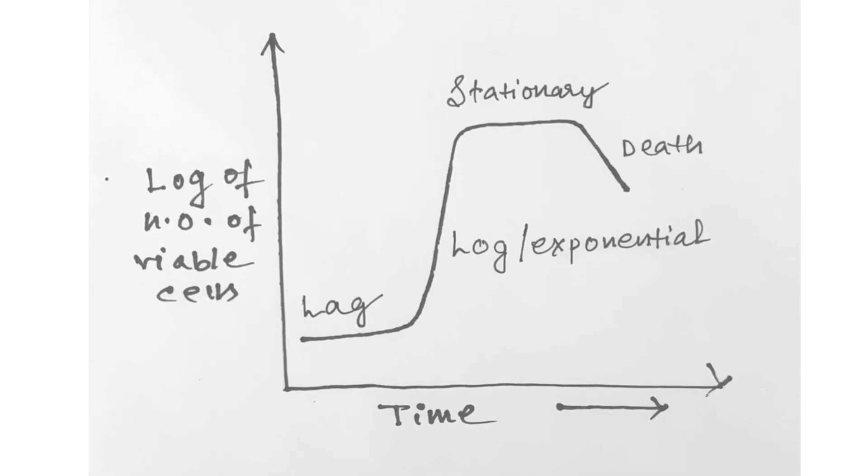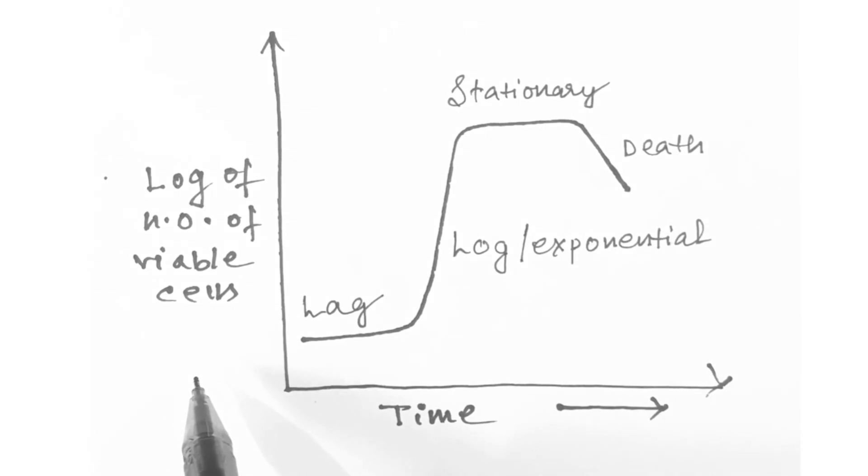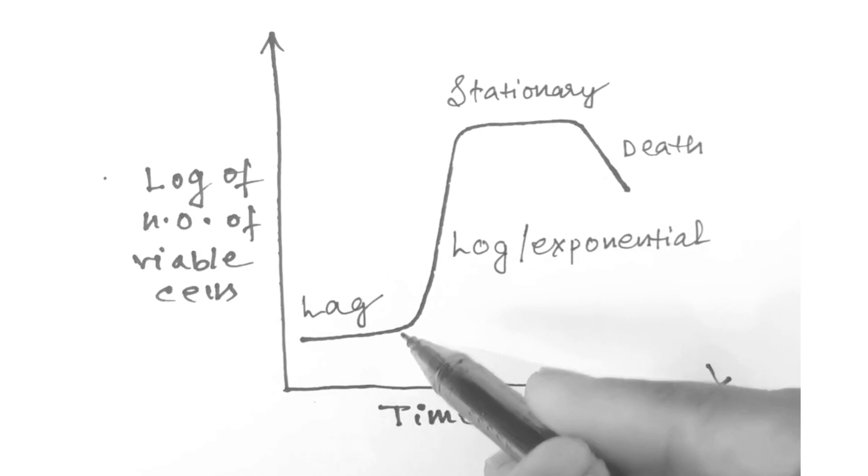Now let's see how we can calculate the generation time from the given bacterial growth curve. The population data are plotted with the logarithmic axis used for the number of cells. The time to double the population number is then read directly from the plot. When we are going to calculate the generation time, we are going to take only the exponential phase into consideration.